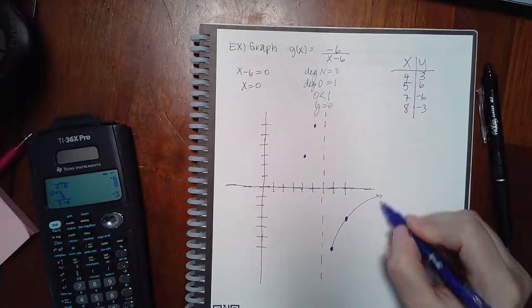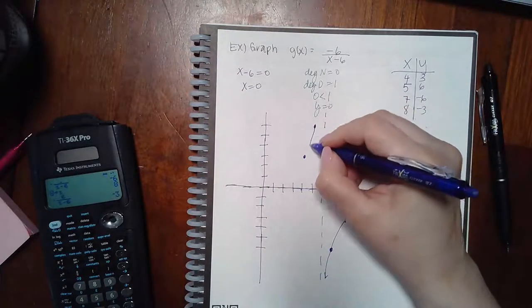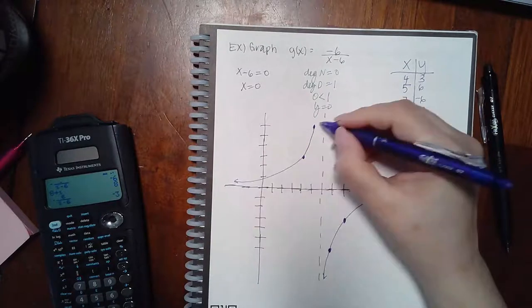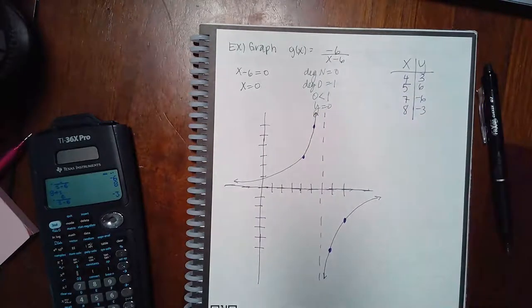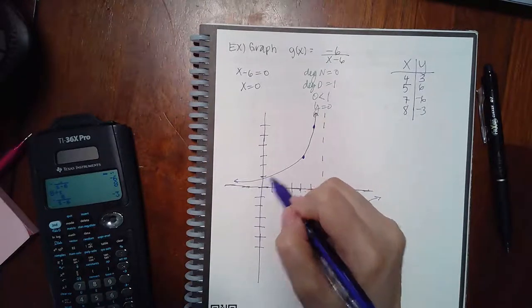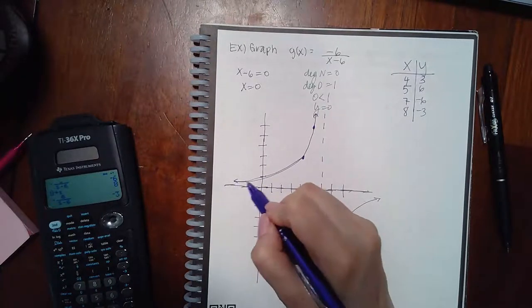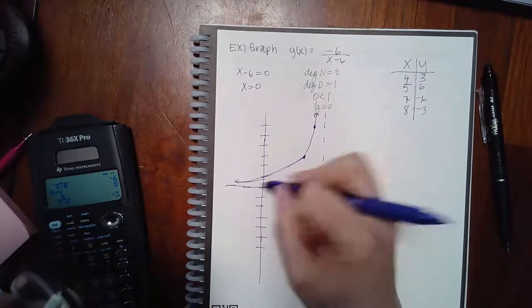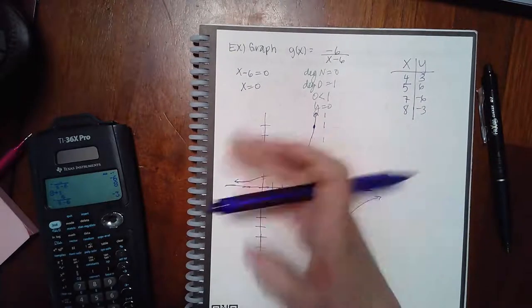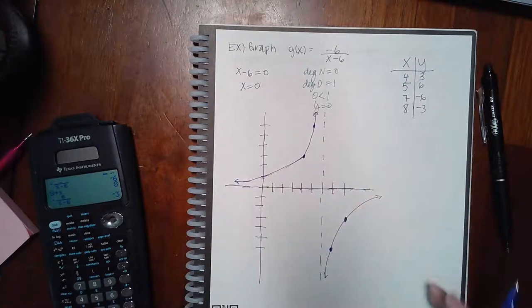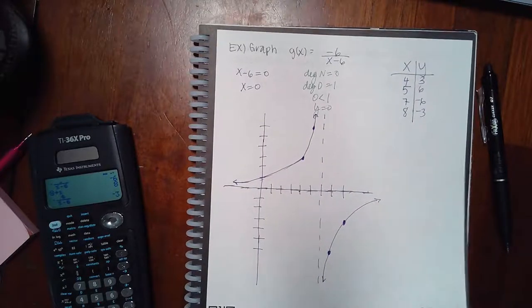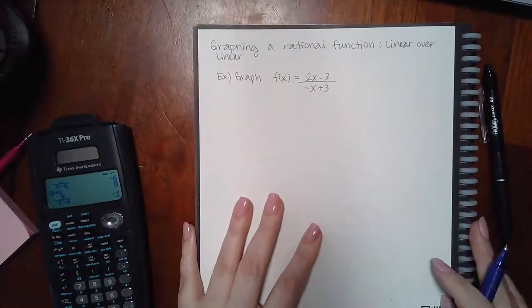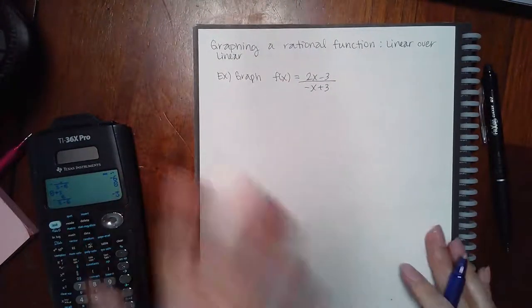I'm going to go ahead and draw it in. There we go — it actually should cross through this spot; I just missed it when drawing. If you hit the graphing icon on the computer it will draw it correctly. Now some more graphing — same process, just the functions look different.